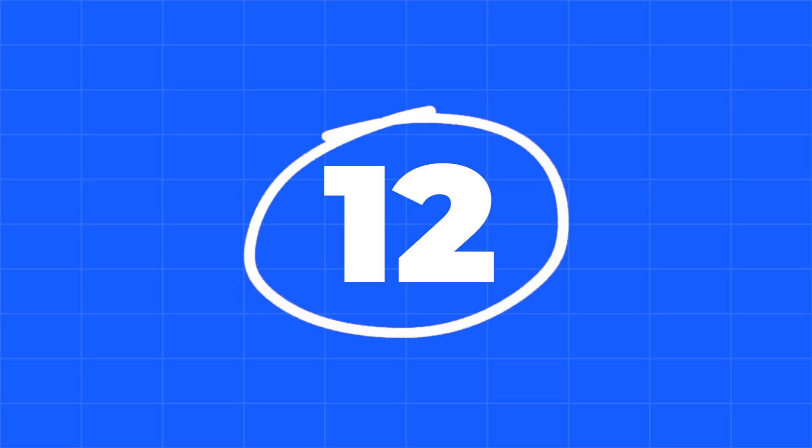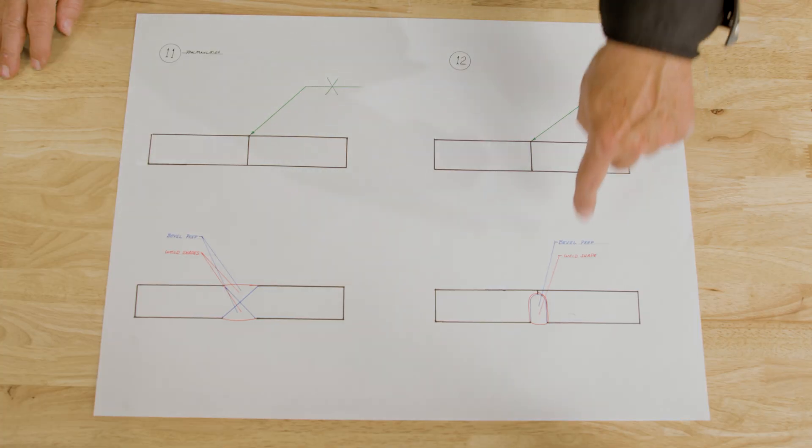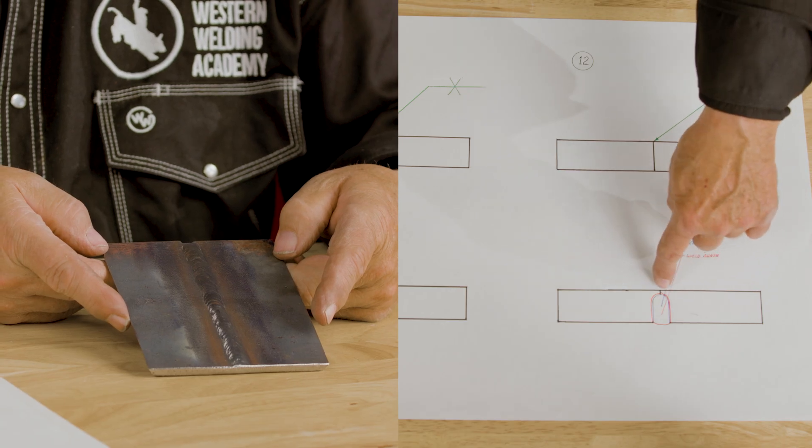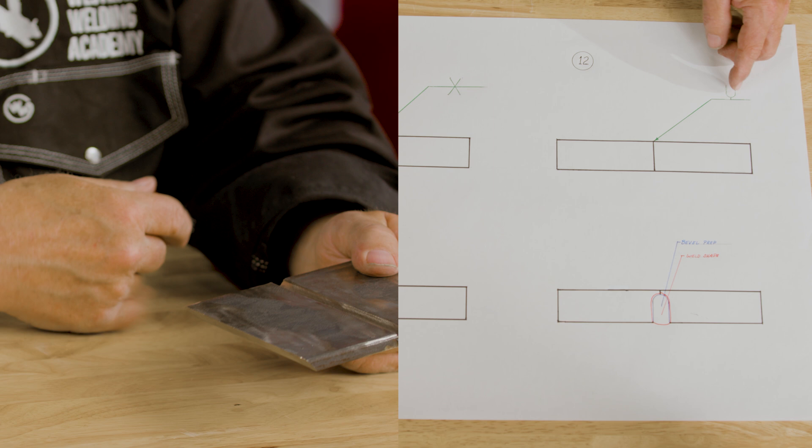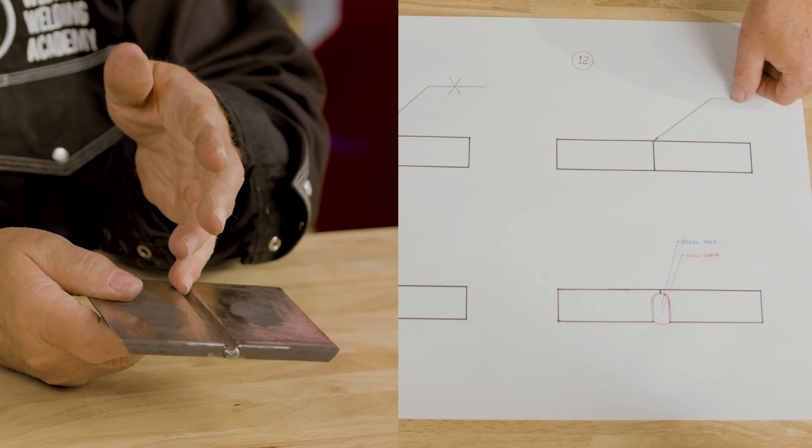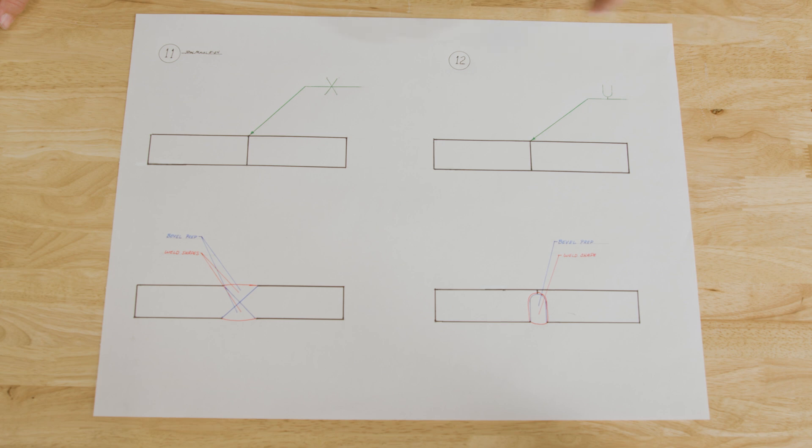This is a U bevel, essentially two facing J's, but they call it a U bevel and it will be a good strong weld. And normally you cut it deep enough to where if you have the dimension here, you might say zero or a sixteenth or whatever, that will tell you the gap you need to have between the two small straight lands, if you want to call them that. And that way you'll be able to get the penetration clear through.